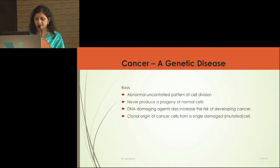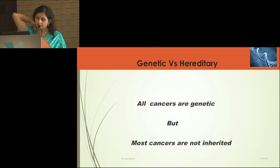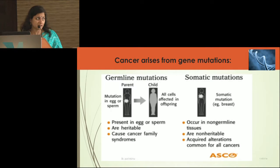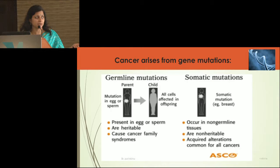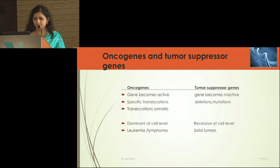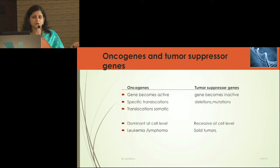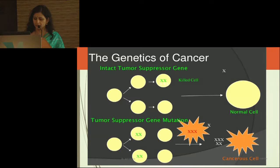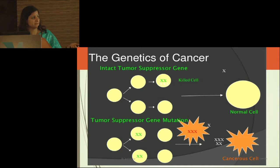Cancer is a genetic disease because it is an abnormal, uncontrolled pattern of cell division. A cancer cell will never produce a progeny of normal cells. DNA-damaging agents increase the risk of cancer, and cancers have a clonal origin. All cancers have a genetic origin, but most cancers are not inherited. Mutations in germline cells affect gonads and are passed on to offspring 100%, whereas somatic mutations happen in specific cells and are not inherited. We all have oncogenes — normally inactive, but when activated by mutation they produce cancer cells — and tumor suppressor genes that repair DNA damage. When tumor suppressor genes become inactive due to mutation, the abnormal cell keeps dividing, giving rise to cancer.